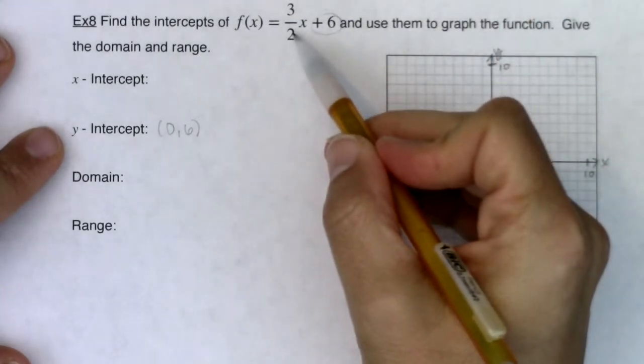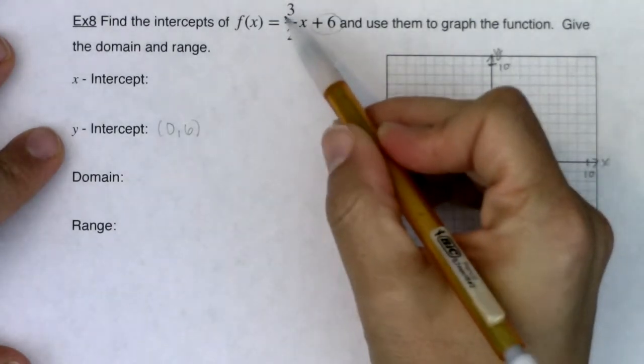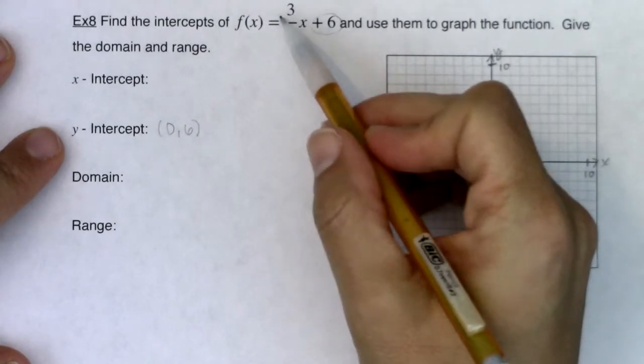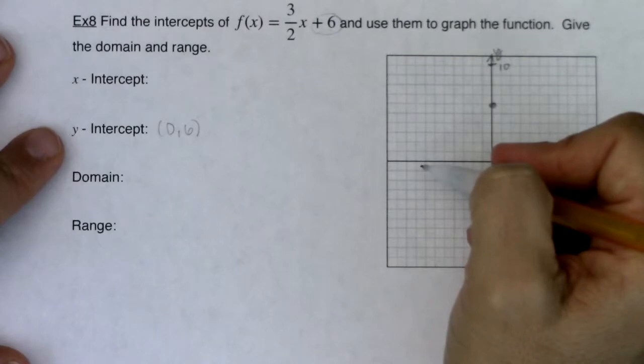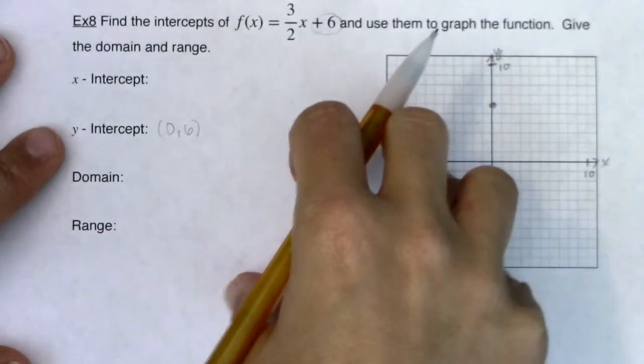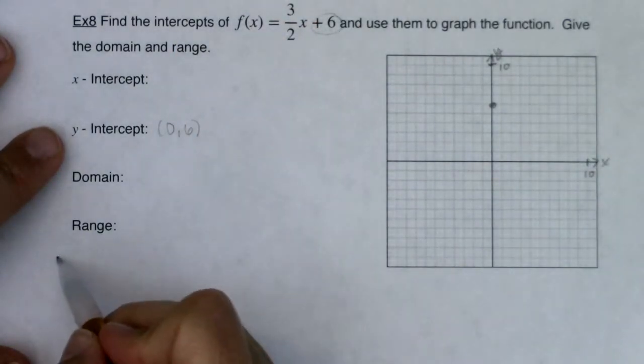Now again, you could use the slope and figure out the graph of the line. We could use the three halves to move up, down, left, and right depending on how we want to move. You could just make a table of values like we did in example six and plot some other points. You could use your calculator and its table function and plot some other points. But I've been asked to find the x-intercept, so let's go ahead and find it.